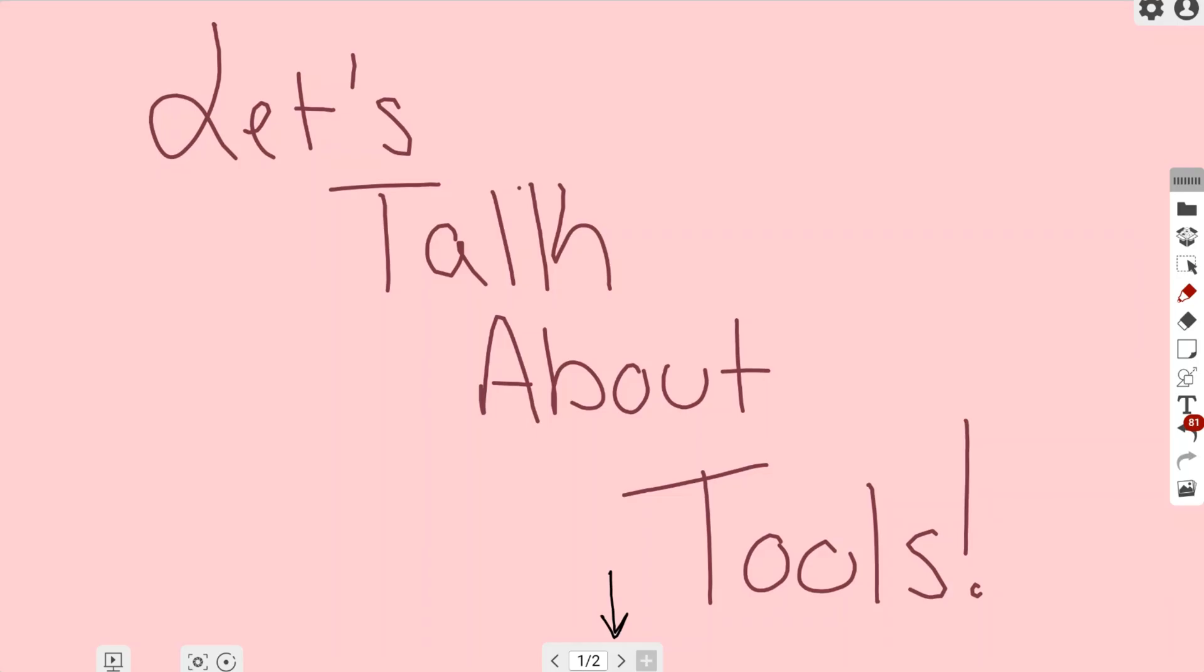In this video about tools, we're going to be talking about the text editor. The text editor is located on the right-hand side in your toolbar. It looks like a giant T—I always say T is for text editor—and it's located directly below your shape tool.